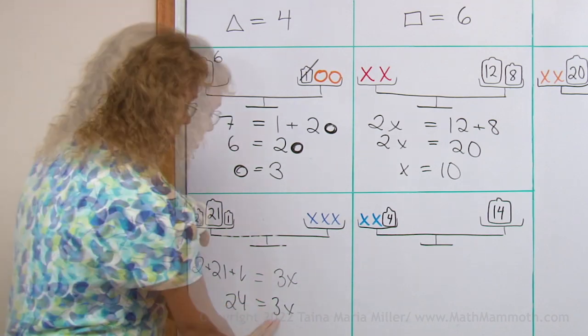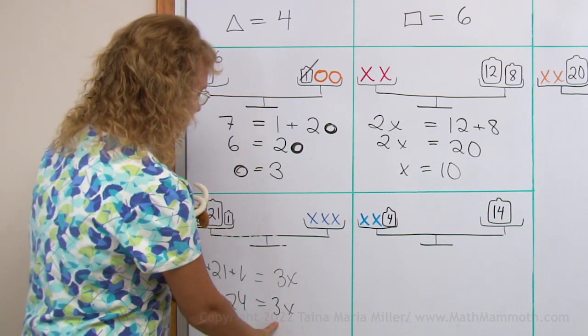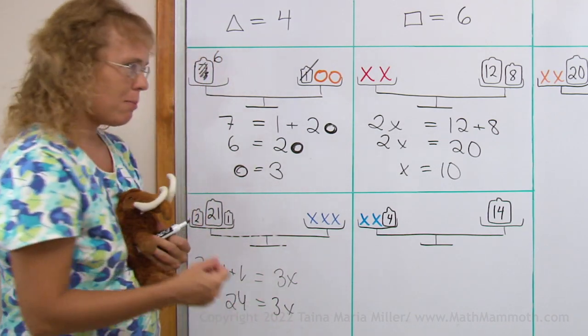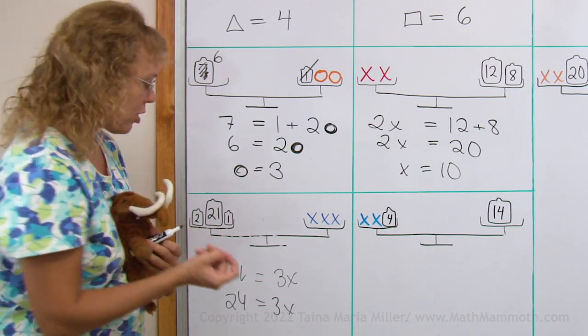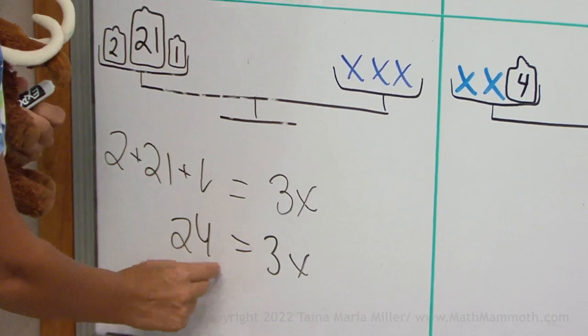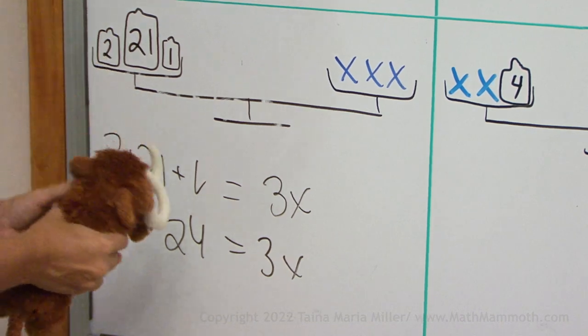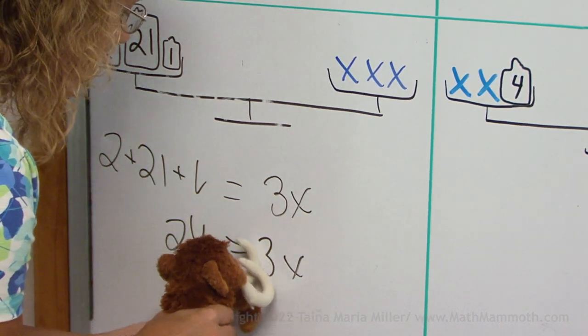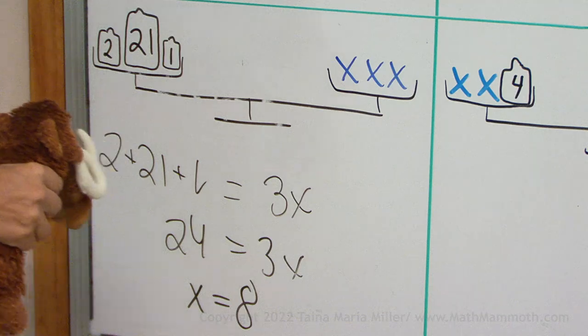And now you can surely solve 1x, okay? If 3x makes 24, then 1 must be... Use division. Basically you take 24 divided by 3, that's 8, right? Yeah. Write the solution now. x equals 8.